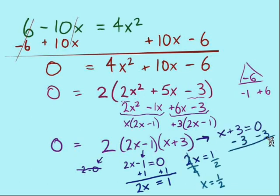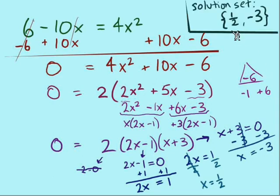x plus 3 is the next part. Take away 3 on each side leads us to x equals negative 3. Our other solution. There's our solution set. Positive 1 half and negative 3.